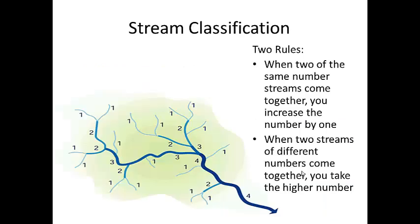When you're classifying a stream, there are two rules to remember. It doesn't follow regular math, so make sure you pay attention. When two streams of the same number come together, you increase the stream order by one. For instance, when a one and a one come together, it makes a two. That's what you might expect. But when a two and a two come together, it makes a three. So anytime you have two streams of the same order coming together, you increase the number by one. Notice here, a three and a three coming together make a four. So that is the first rule. These two rules, by the way, you should write down in your journal. Stream classification, these two rules, it's very important.